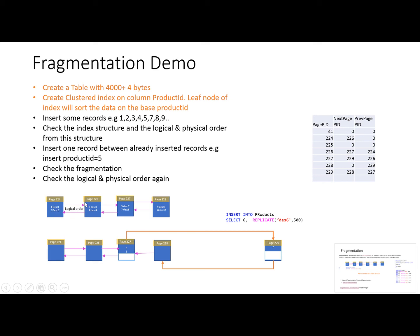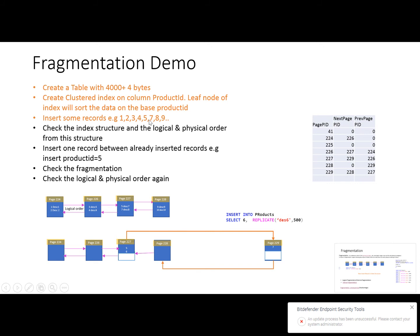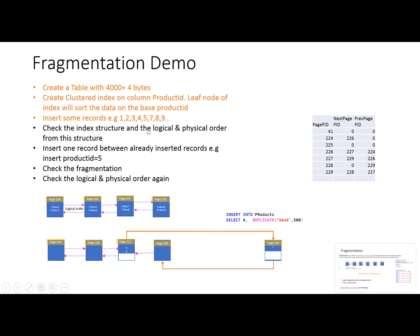After sorting records by product ID, I will insert some records: one, two, three, four, five, six, seven, eight, and nine — with record six missing between five and seven. After insertion I will study the logical and physical orders of this index structure. Then I will insert the missing record number six and see how the index structure handles it, observing logical fragmentation and internal fragmentation using SQL Server Management Studio.